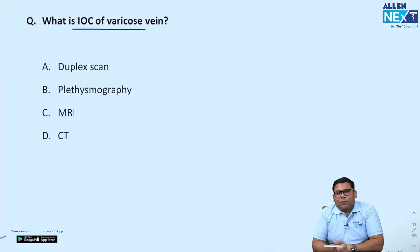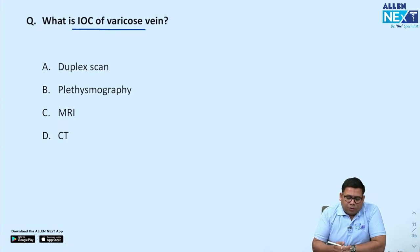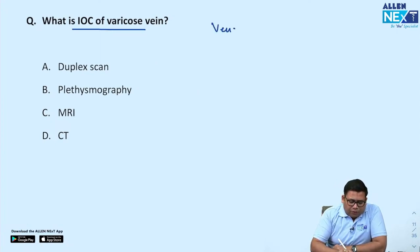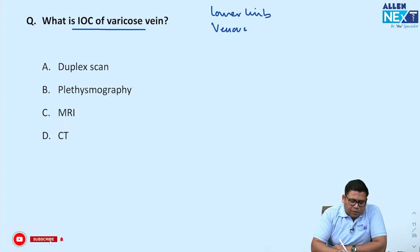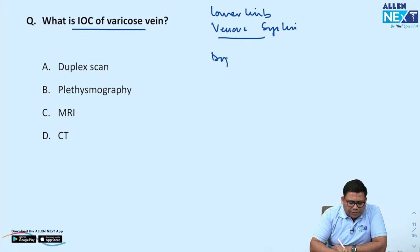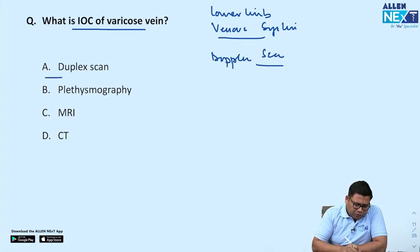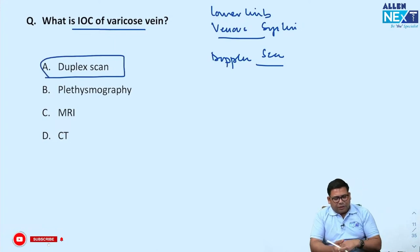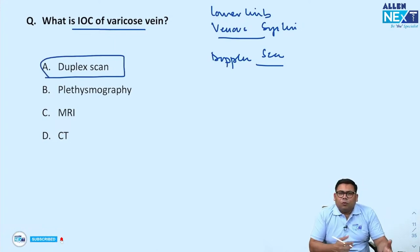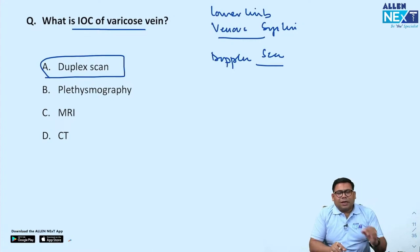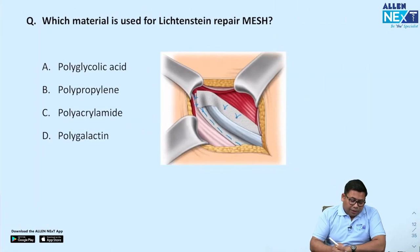Investigation of choice for varicose veins — whenever we talk about the lower limb venous system, the ideal investigation is a Doppler scan. Duplex or plethysmography is not required here. MR venography would be over-investigation. Doppler scan has high sensitivity, specificity, and accuracy.